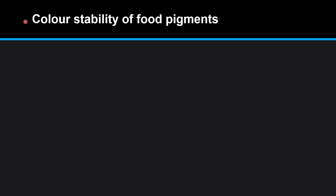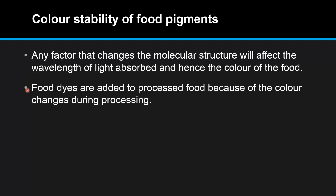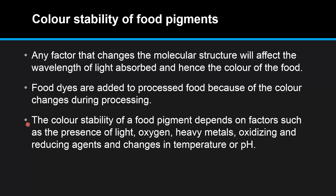In this video we look at the color stability of food pigments. Any factor that changes the molecular structure will affect the wavelength of light absorbed and hence the color of the food. Food dyes are added to processed food because of the color changes during processing. The color stability of a food pigment depends on factors such as the presence of light, oxygen, heavy metals, oxidizing and reducing agents, and changes in temperature or pH.